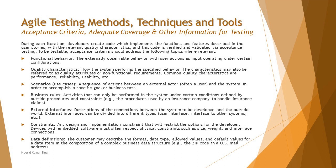Following functional behavior, we have quality characteristics, which deal with non-functional parameters of a particular requirement. Then there are scenarios and use cases, which help us understand what the exact control flow of an application would be. Business rules are another part — the conditions, procedures, and constraints could be dealt with as part of acceptance criteria. External interfaces, meaning third-party dependencies, should also be considered as part of acceptance criteria constraints, along with inputs to the business rules.